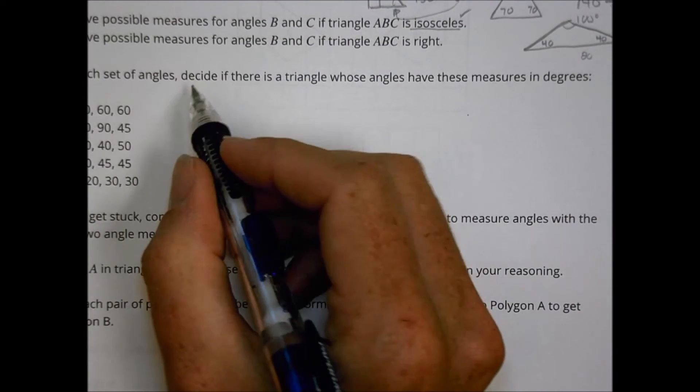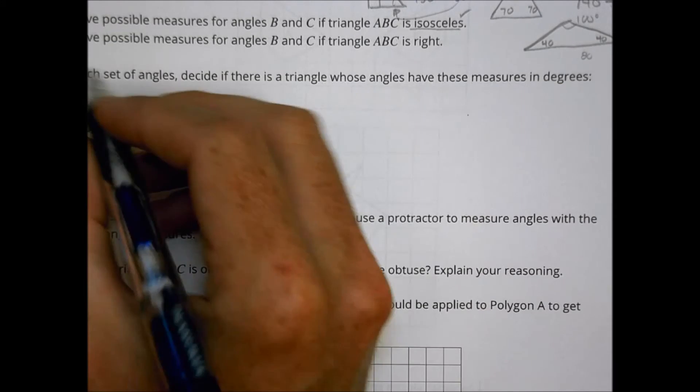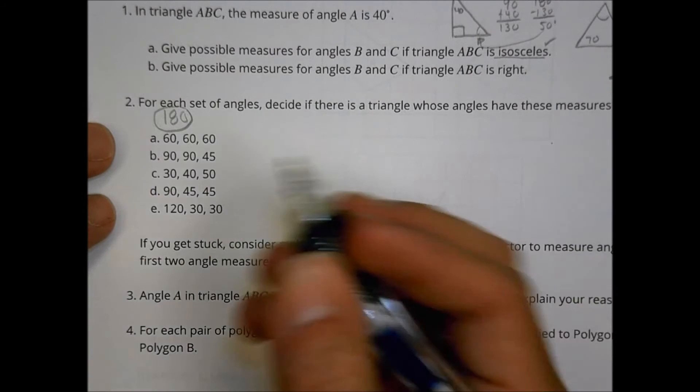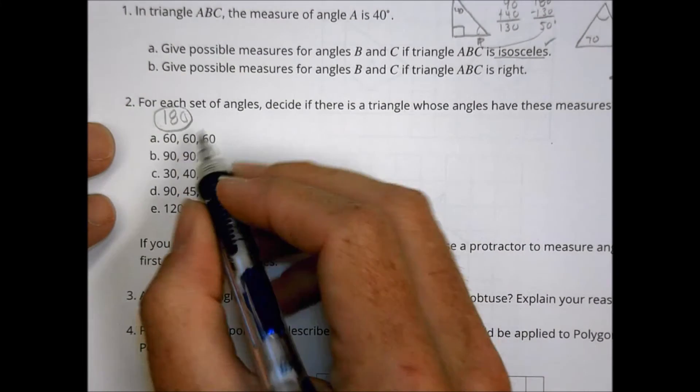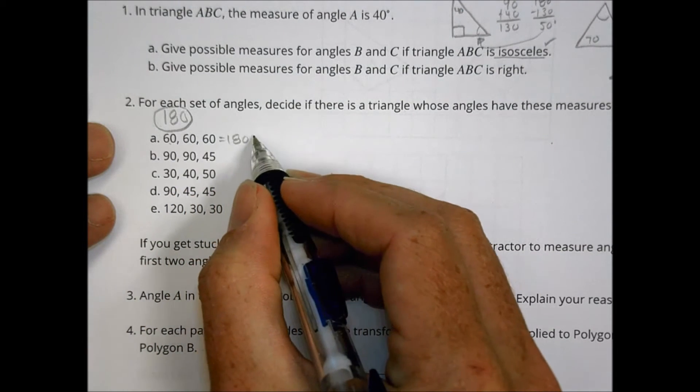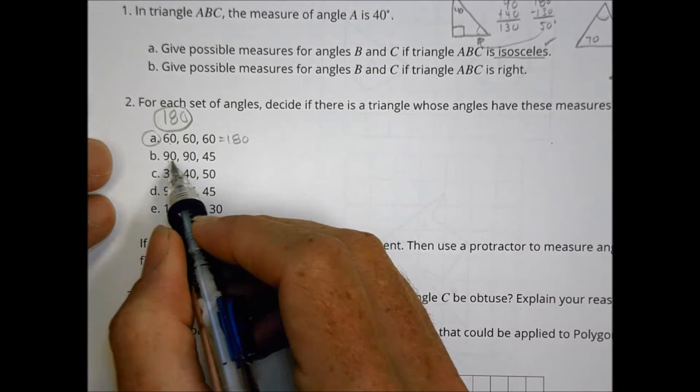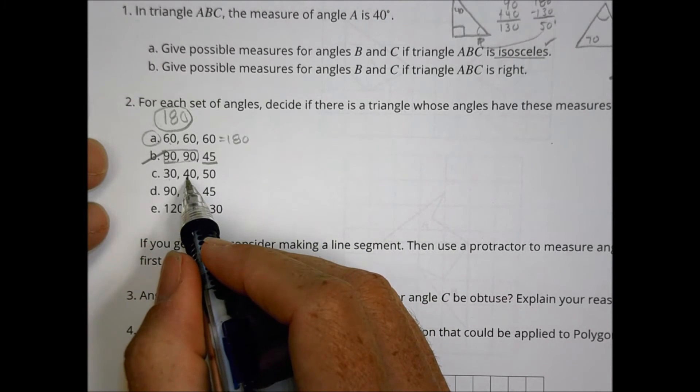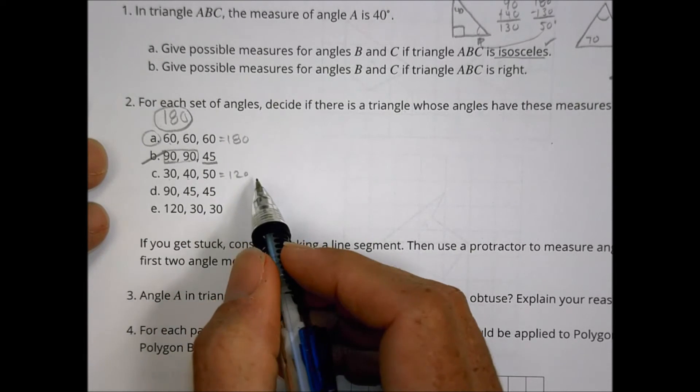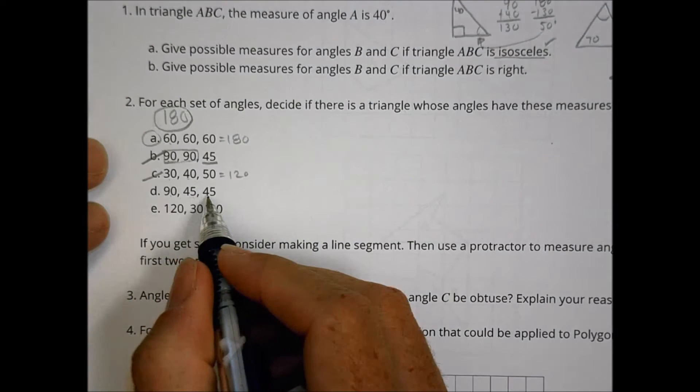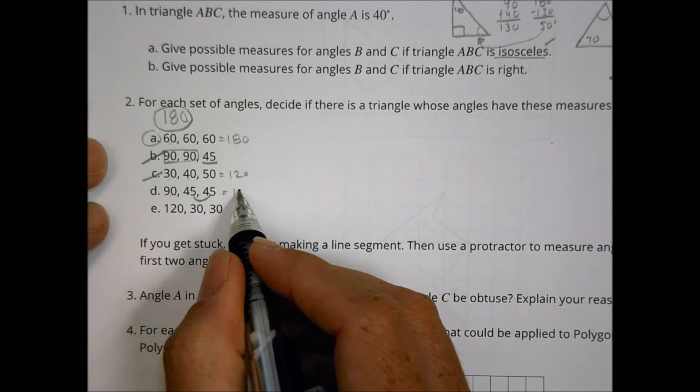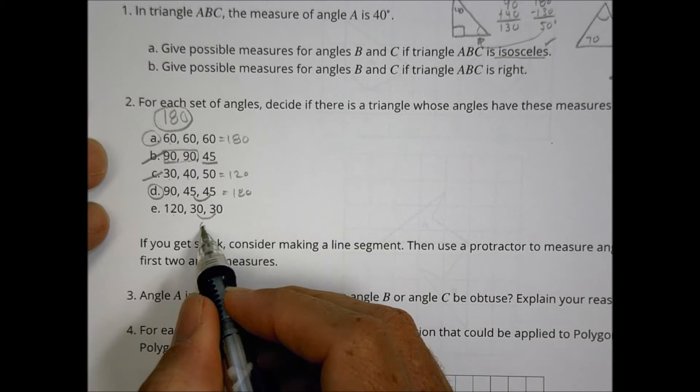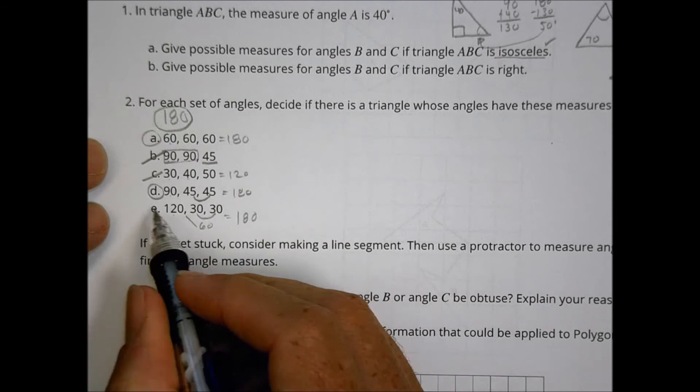Problem two: For each set of angles, decide if there is a triangle whose angles have these measures in degrees. The key thing here is remember that the sum needs to be 180, no more, no less. If we have more, it's not a triangle. If we have less, it's not a triangle. So you could just do some simple math here. 60 plus 60 plus 60 equals 180. So that's going to be okay. For B, 90 and 90 is already 180, and then I have this extra piece. So that's not going to work. It's too large. Here I have 30 and 40 is 70 plus 50 is 120. That's too small. It won't make a triangle. 90 and a 45, 45 - well, two 45s is 90 plus another 90 equals 180. We would say yes, that's going to work. And here we have 120 plus 30 plus 30. 30 and 30 is 60, 60 plus 120 is 180. We would say yes, that would work.